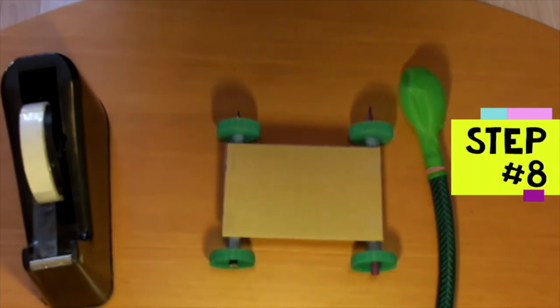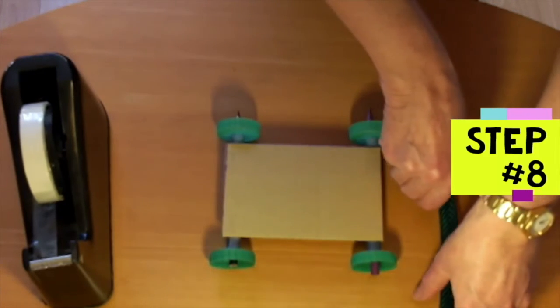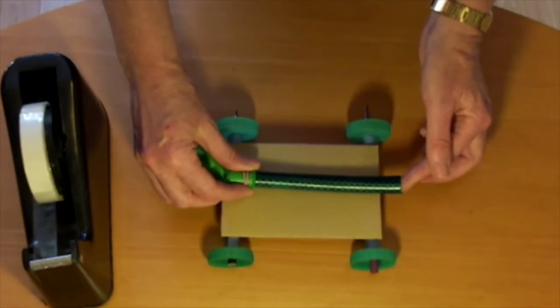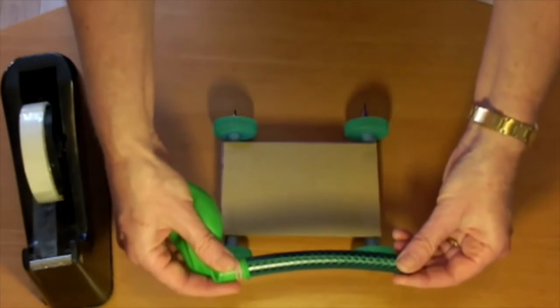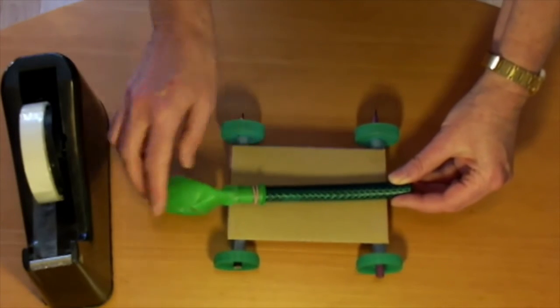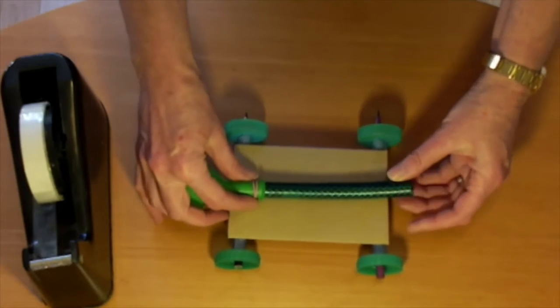Step 8 is to attach the tube. You need to tape the tube to the top of the base. Make sure this end is sticking out so that you can blow into it. If the tube is curved like this garden hose, make sure this end is curving upwards. This stops the balloon rubbing on the floor as much so the buggy will go faster.